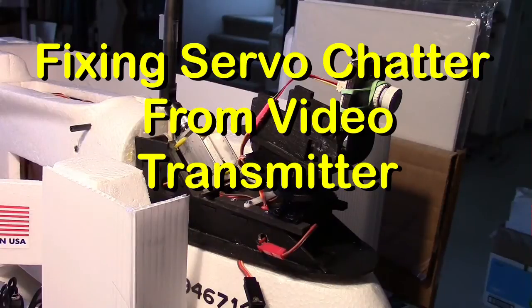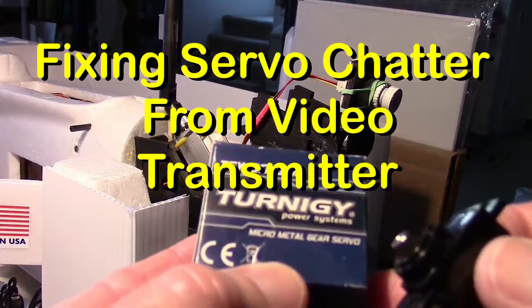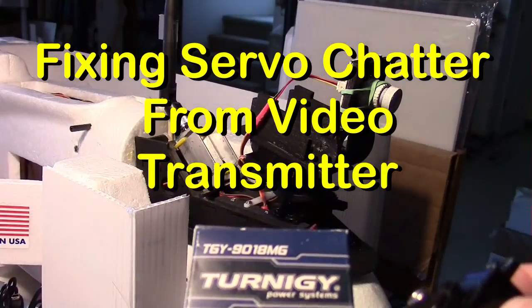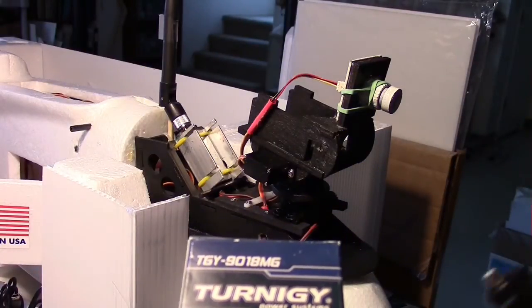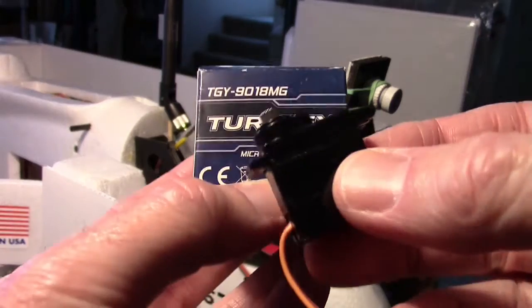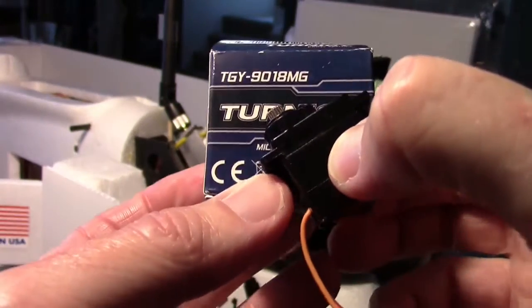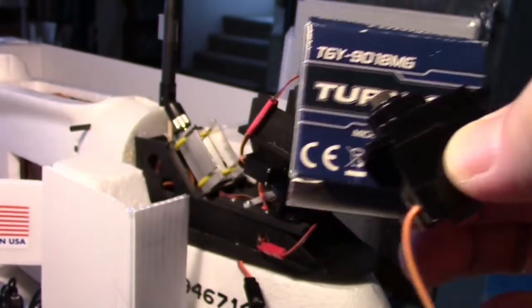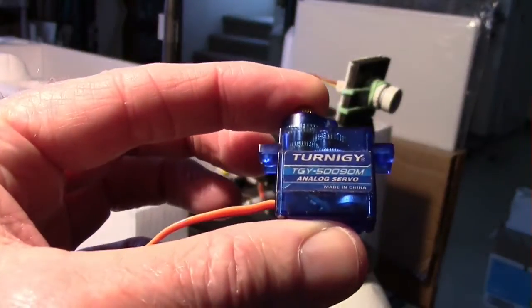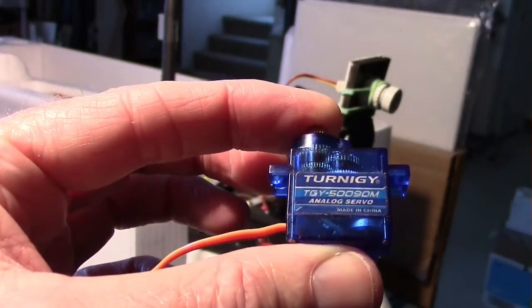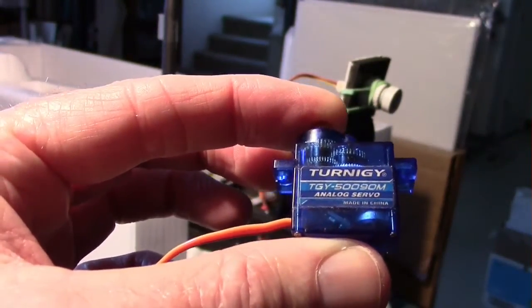So the two servos I'm going to test are, first of all, I have the Turnigy 9018 Metal Gear servo, which is this one right here, and then the second one I'm using is a Turnigy 50090M Metal Gear servo.